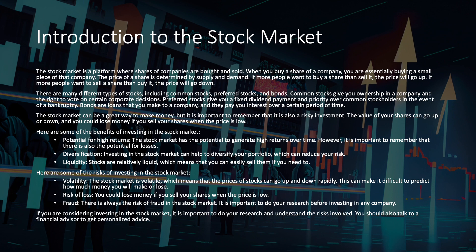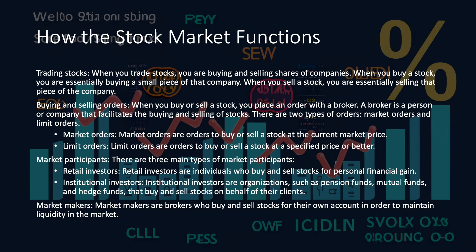How the stock market functions. The stock market operates through a complex web of buying and selling orders. Investors place orders through brokerage firms, and these orders are matched on stock exchanges, resulting in price discovery and trades executed.